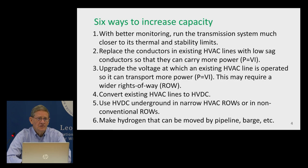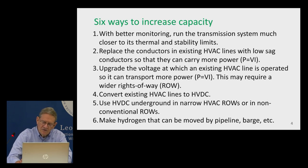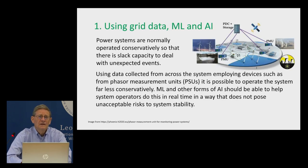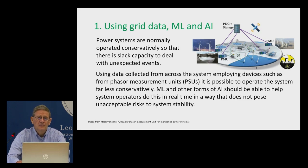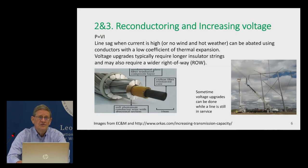There's a seventh issue not listed on this slide: we could move demand to where the energy is being produced. Using grid data, machine learning, and AI, it's almost certainly possible to expand the amount of energy we move through existing transmission systems by reconductoring and increasing the voltage of existing AC lines.